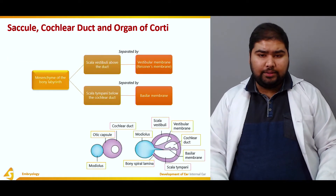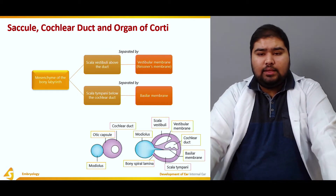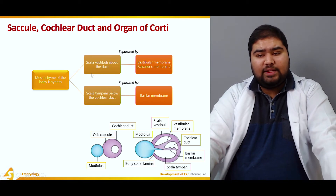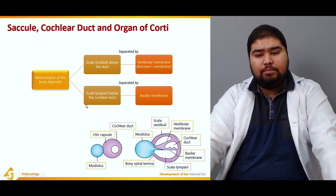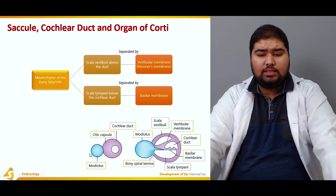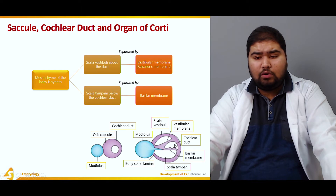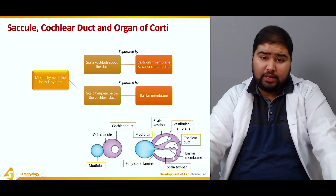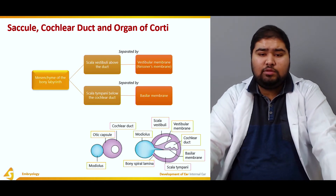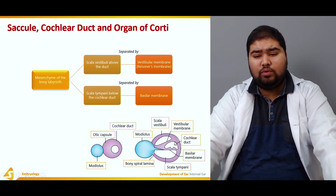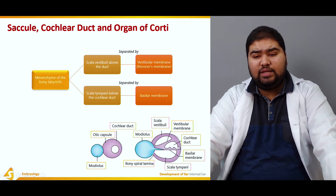Moving on to the mesenchyme of the bony labyrinth — we can divide it into the scala vestibuli, which lies above the cochlear duct, and the scala tympani, which lies below the cochlear duct. Looking at the figure, the otic capsule and the modiolus are visible along with the cochlear duct. The scala vestibuli is above and the scala tympani is below the cochlear duct, separated by the vestibular membrane and the basilar membrane respectively.